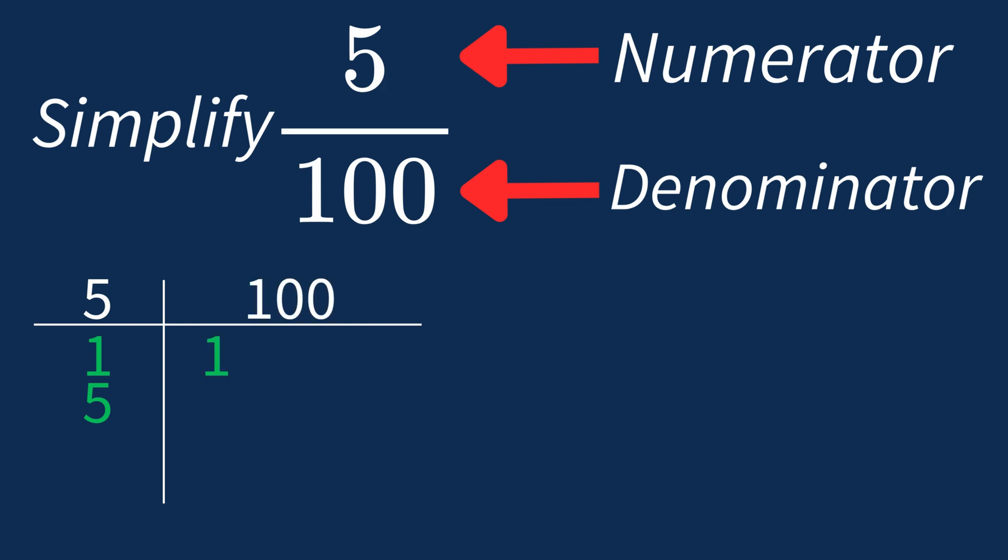For 100, the factors are 1, 2, 4, 5, 10, 20, 25, 50, and 100.